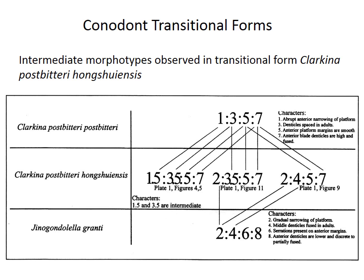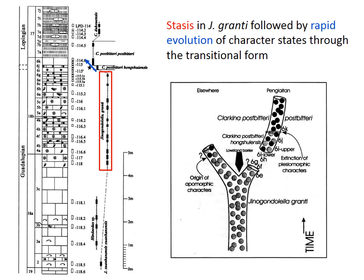We can see stasis in Hindeodus granti for perhaps a couple hundred thousand years, followed by fairly rapid evolution through the intermediate form to Clarkina postbitteri — the rapid change occurring within less than a few tens of centimeters of rock thickness stratigraphically. This evolutionary shift coincided with a low point in sea level, consistent with the fragmentation of populations expected in allopatric speciation. This example demonstrates how powerful the fossil record can be for understanding evolutionary patterns and the processes that control evolution, especially in super-abundant groups that allow these types of high-resolution studies.